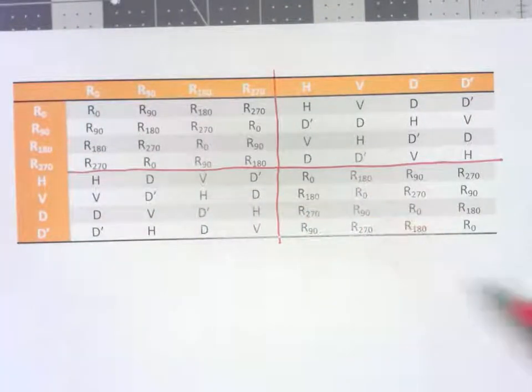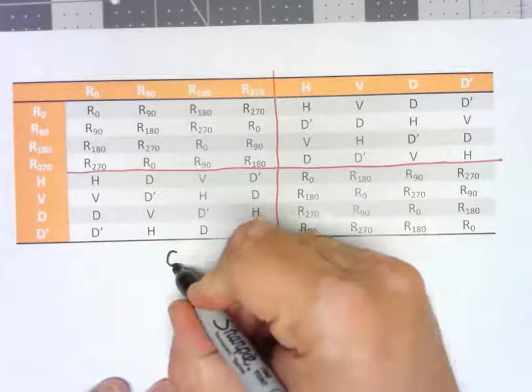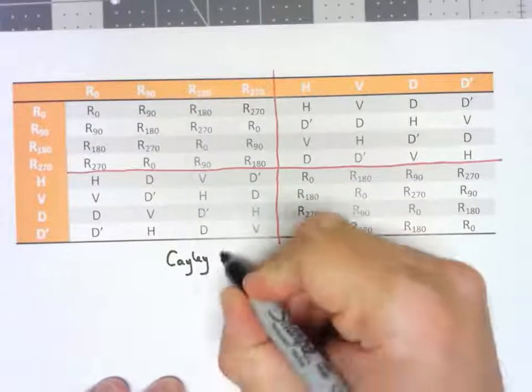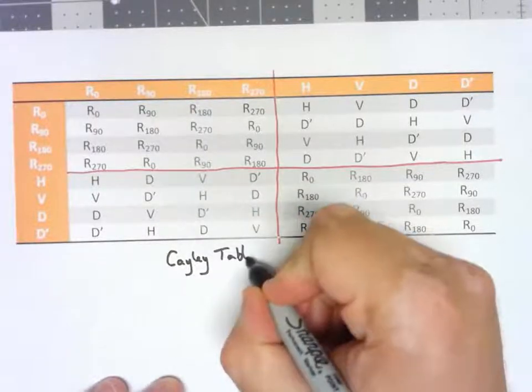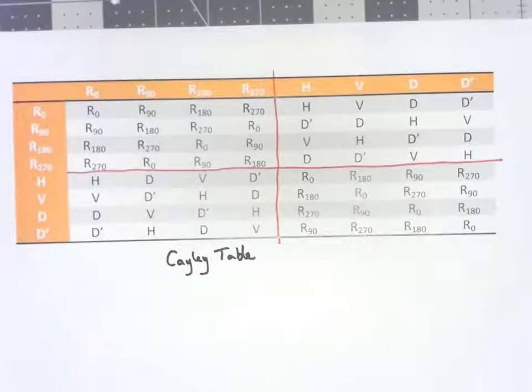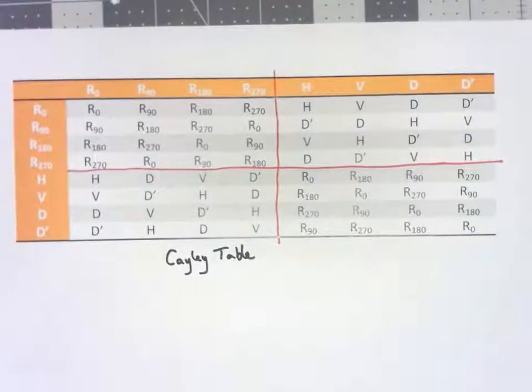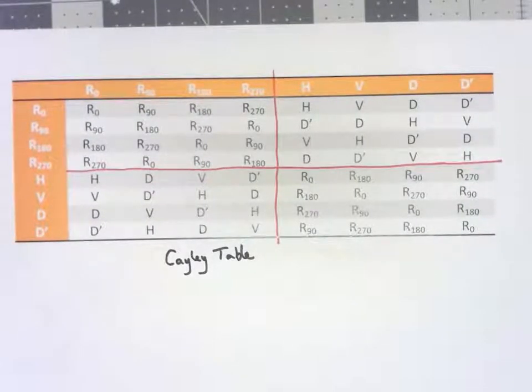This table is what we call a Cayley table, and it's a very convenient way to talk about the different operations on what we're also going to call a group.